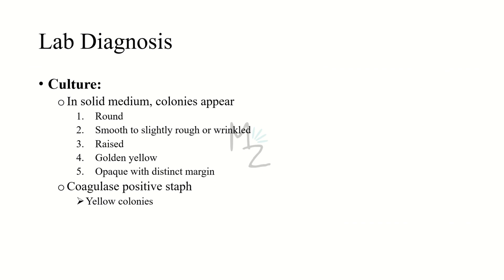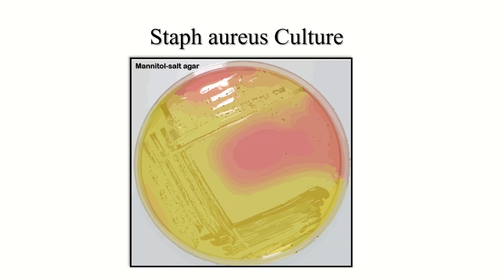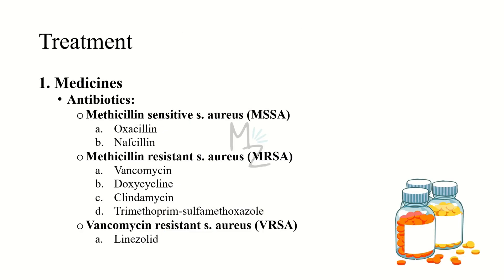Culture on solid medium: we use Mannitol Salt Agar. Colonies appear round, smooth to slightly rough or wrinkled, raised, golden yellow, opaque, with distinct margins. Coagulase-positive Staphylococcus aureus forms yellow colonies on Mannitol Salt Agar — these yellow colonies represent S. aureus.